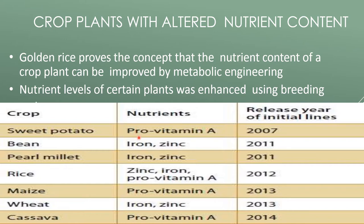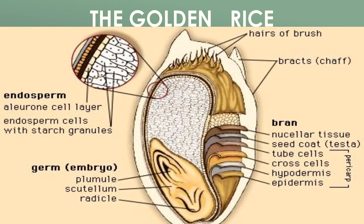The nutrient content increased includes: pro-vitamin A in sweet potato; bean with iron and zinc; pearl millet with iron and zinc; and rice with zinc, iron, and pro-vitamin A — that is golden rice.